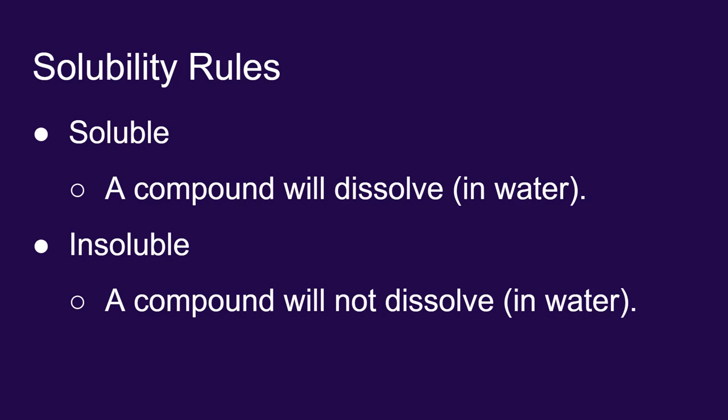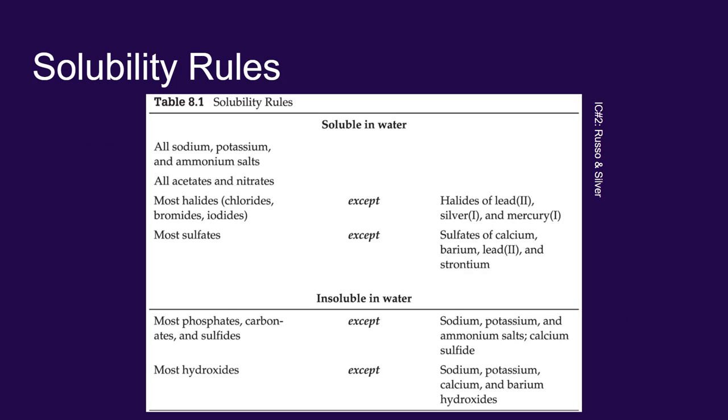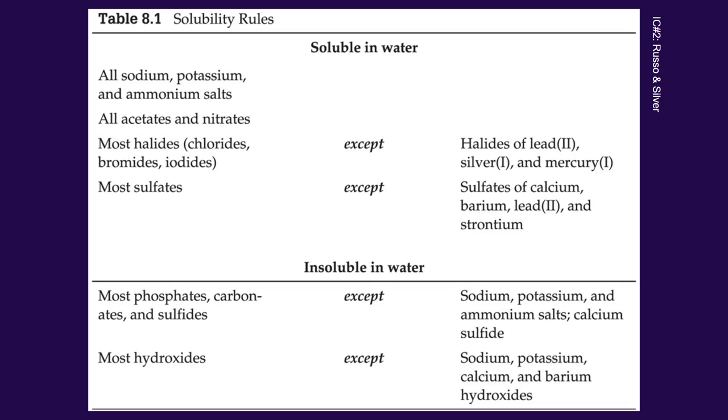Fortunately, there's a table in the book. This is table 8.1 that has rules for figuring out which ionic compounds dissolve in water and which don't. Which ionic compounds are soluble and which are not. We're going to be relying on these solubility rules in the following videos to help us predict the outcomes of these chemical reactions. These solubility rules are also found on the back of your periodic table. They're a good thing to refer to.